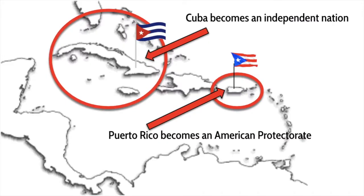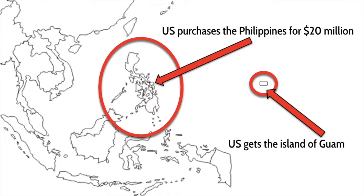The debate continues in the Senate until finally the Senate agrees to pass and ratify the treaty. Cuba will become an independent nation. Puerto Rico, a few islands away, will become an American protectorate where the United States has control over its government. On the other side of the world in the South Pacific, the United States purchases the Philippines for $20 million. And the island of Guam — a very small island — comes under control of the United States, perfect for another naval base out in the Pacific.